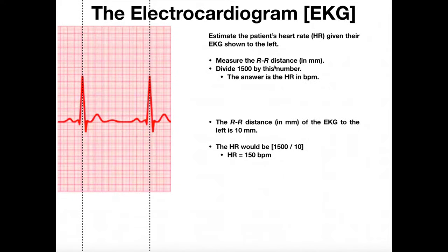What I would do is take that distance, whatever it happens to be, and divide 1,500 by that number — and that number would be the person's heart rate in beats per minute. The RR distance turned out to be 10 millimeters, so the heart rate is 1,500 divided by 10, which equals 150 beats per minute. It's that simple: measure the RR distance knowing each square is 1 millimeter, then take 1,500 and divide by that number to get the heart rate.